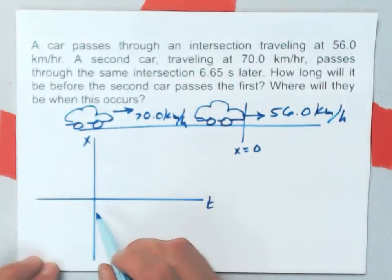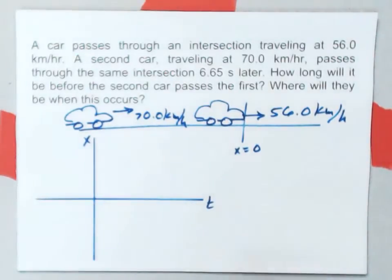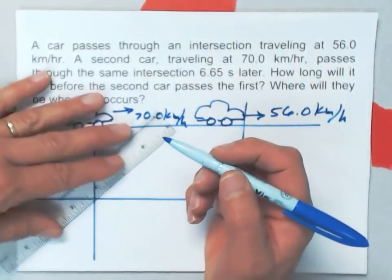At time zero, which is right where these axes cross, the first car is there. And then it moves forward after that from that point.